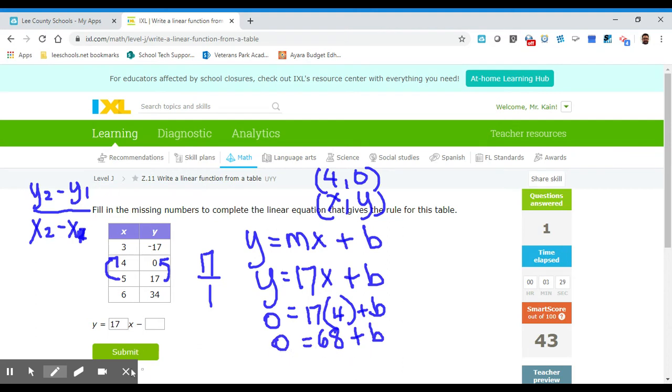So 68 plus b equals 0. And then to solve for b, we just subtract 68 from both sides. So I'm going to subtract 68 over here. This cancels out and it's going to give me my answer, which is b equals, running out of space, b equals 0 minus 68 is negative 68.